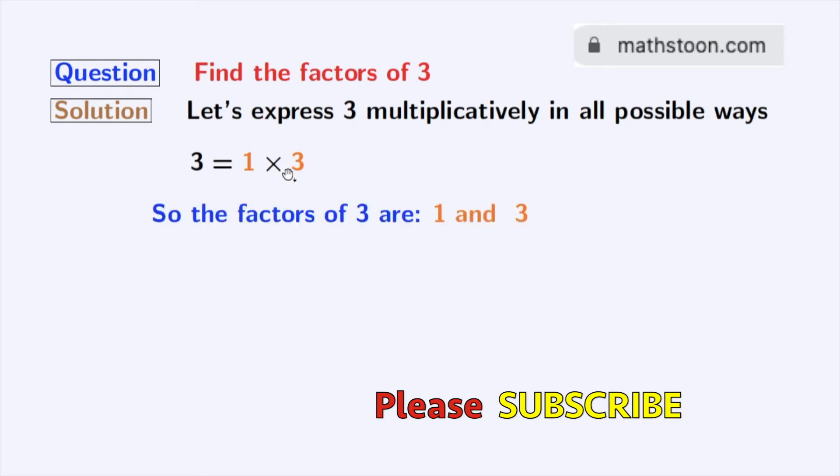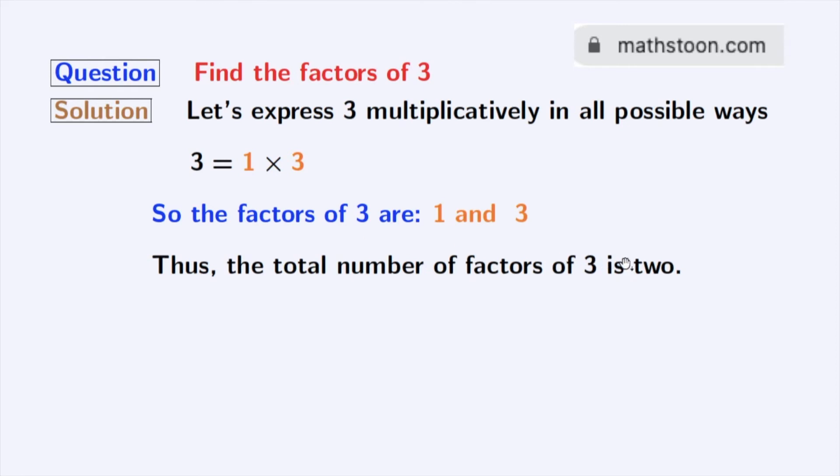So we have the factors of 3 which are 1 and 3. So the total number of factors of 3 is 2.